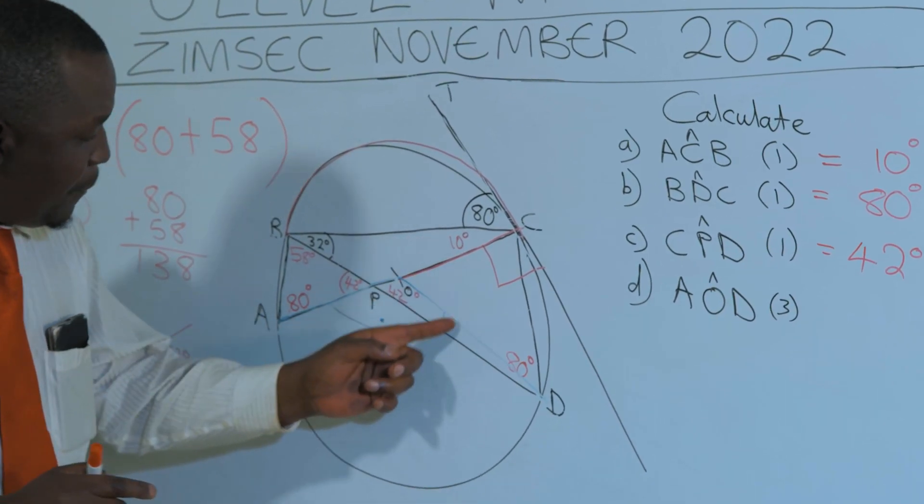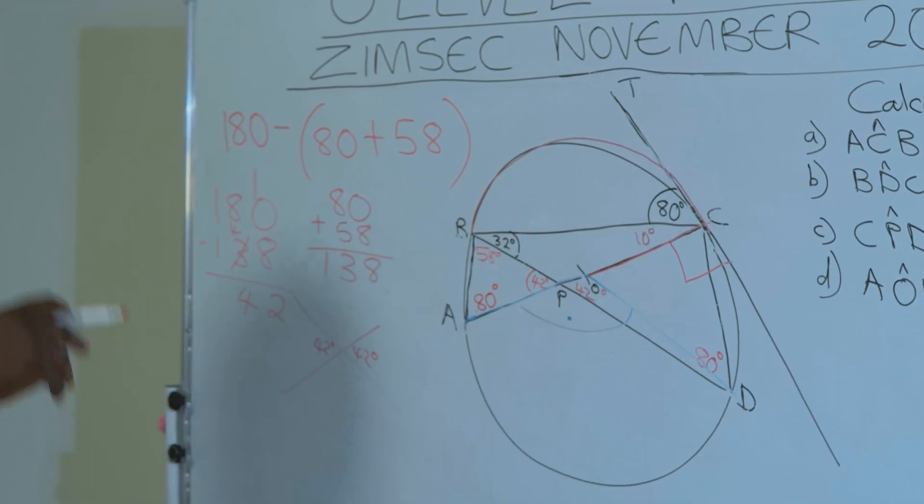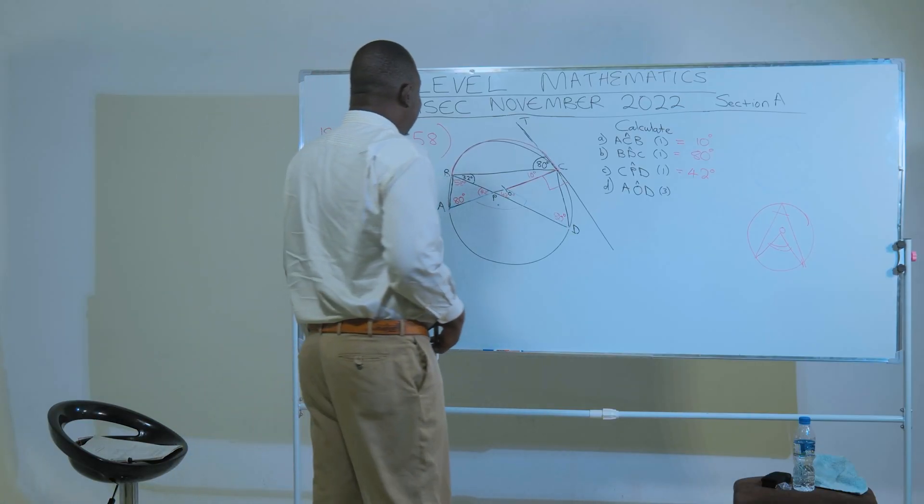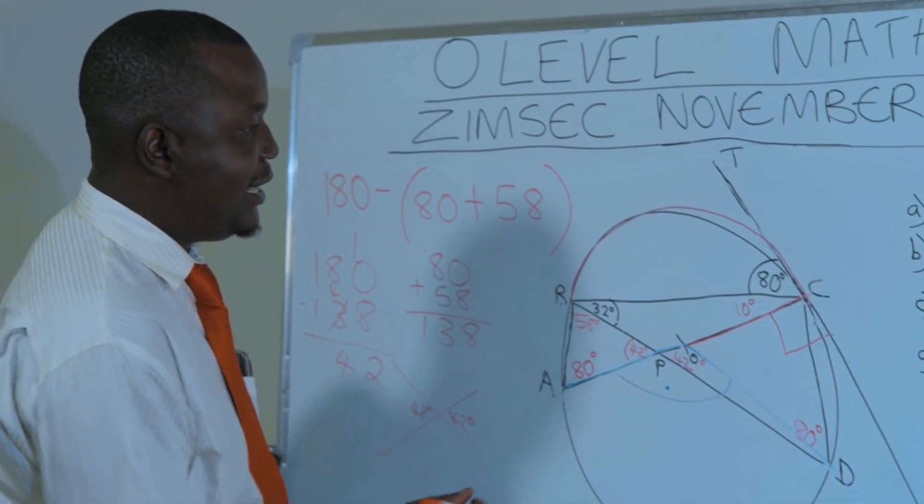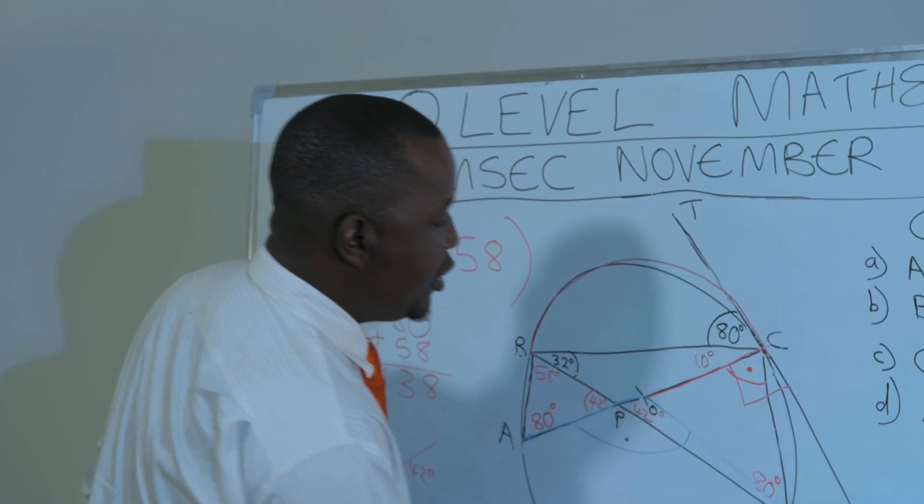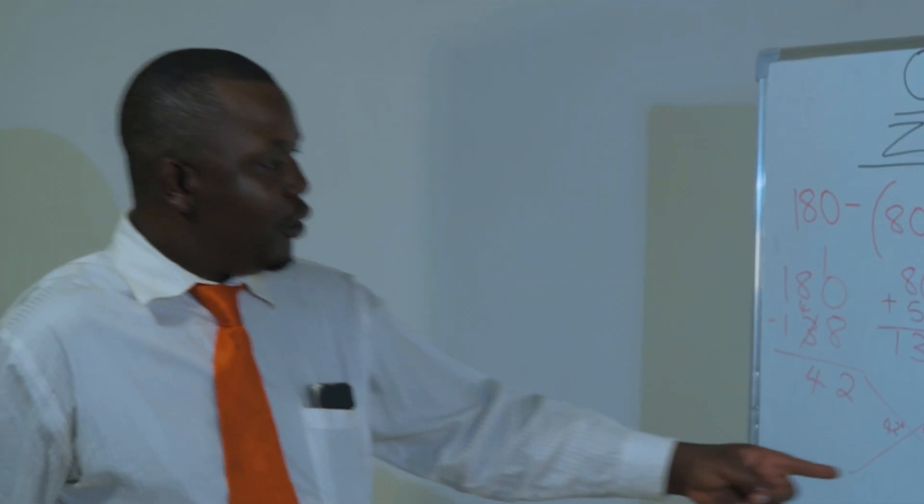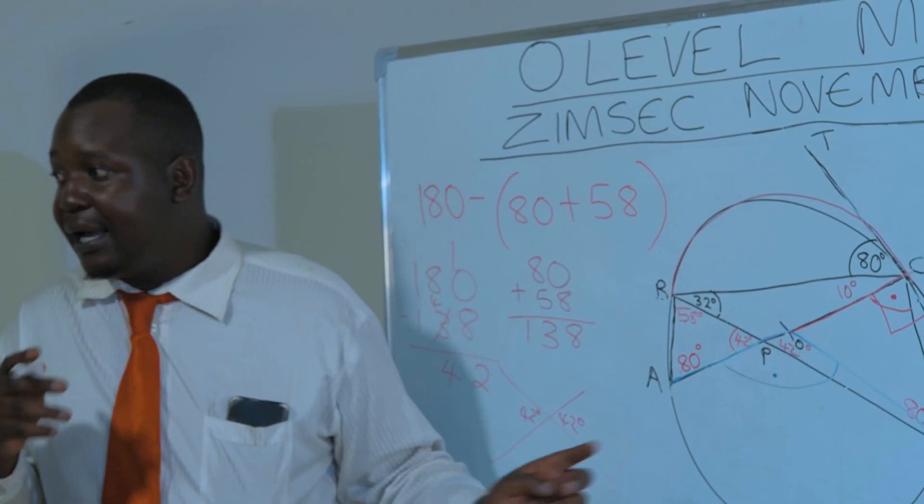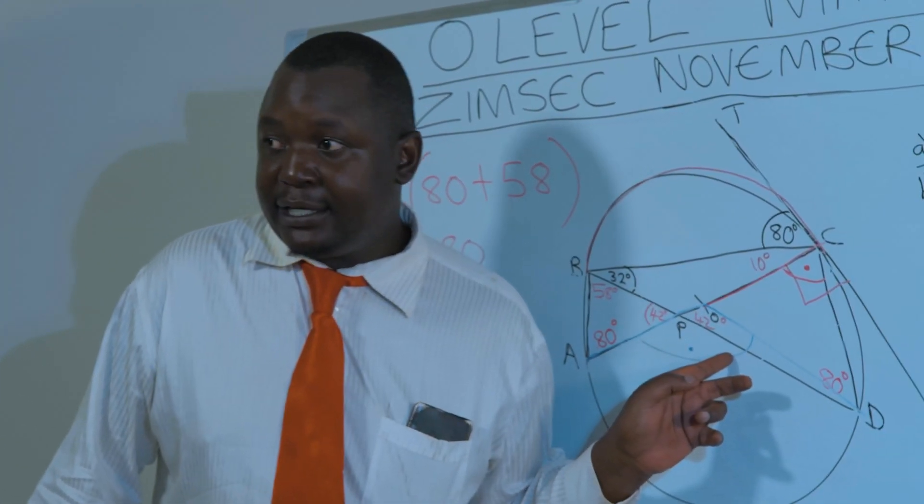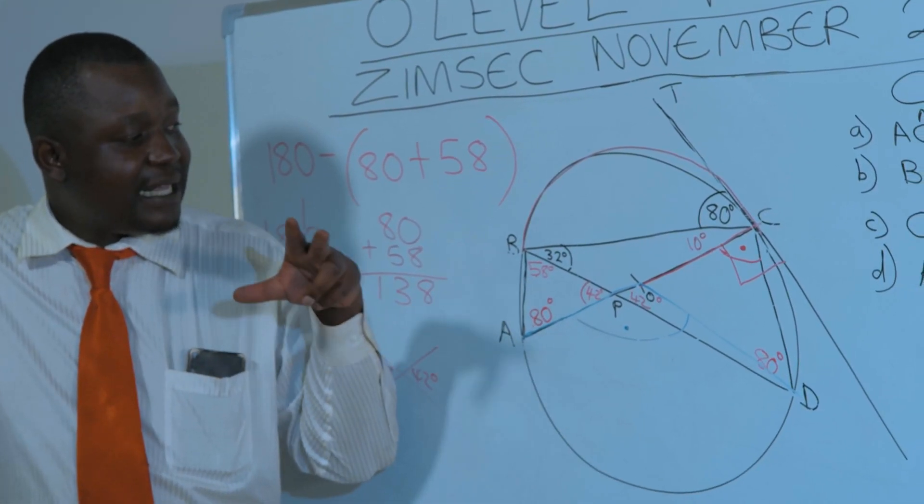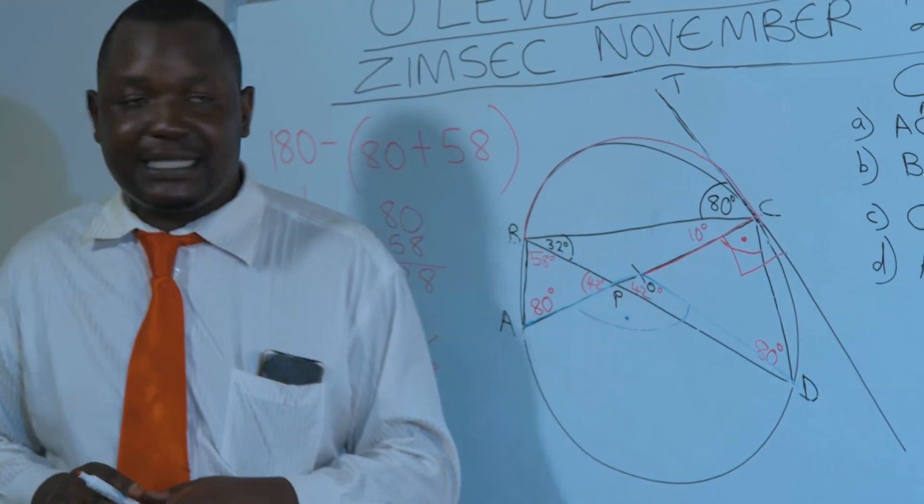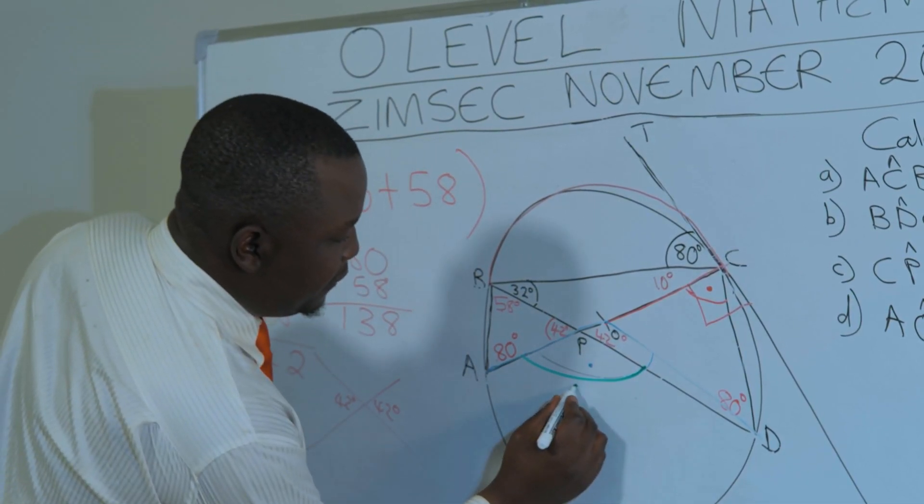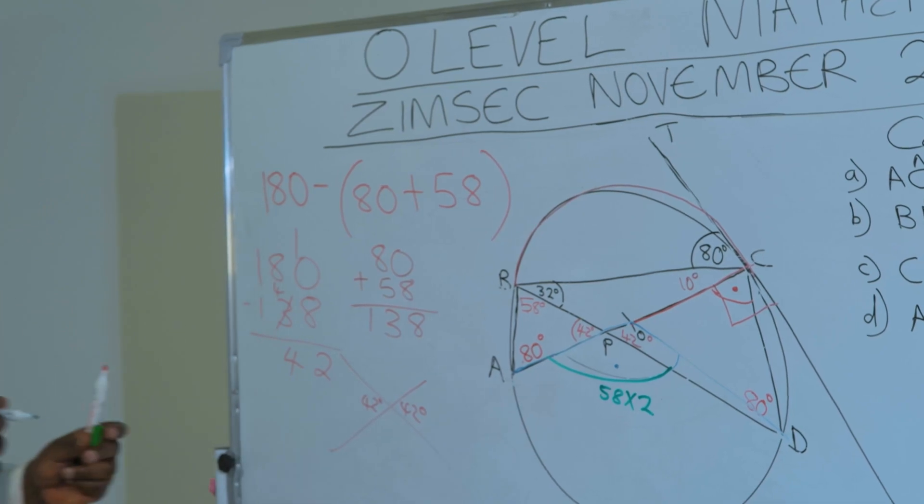Arc AD, so the angle here that is being subtended by the same arc, we have this angle here. So once we find that angle, we now know this angle. And again, as you can see, 58 degrees is also being subtended by the same arc, meaning to say the angle at the center is going to be twice 58 degrees because they are being subtended by the same arc, but one is being subtended at the center, the other is being subtended at the circumference.